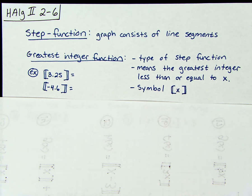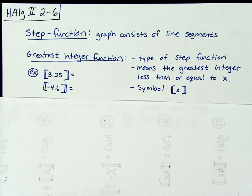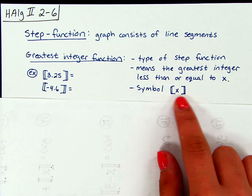So in our greatest integer function, it means that we want the greatest integer less than or equal to whatever we substitute in for x. And we know that we're going to be dealing with the greatest integer function by this symbol that we see right here.